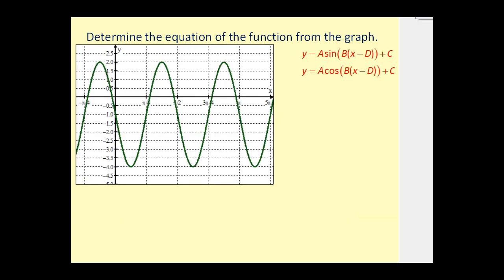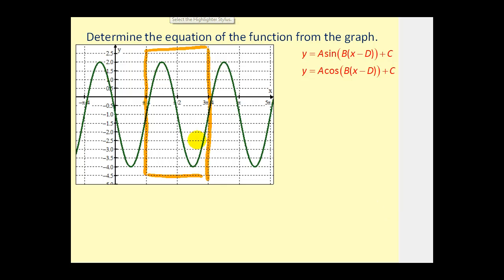Let's try another. First let's take a look at the graph and determine which piece we want to focus on — we want to highlight one period of what looks like either sine or cosine. This is why the equation won't be unique. When I look at this, I see the graph of a sine function starting at pi over four, going up, down, and then back up. So we'll use the sine function.